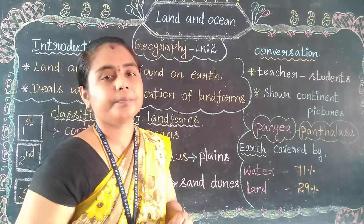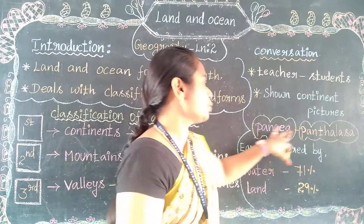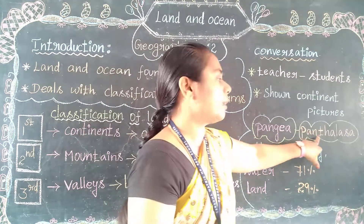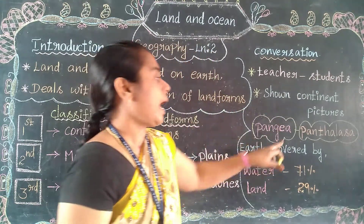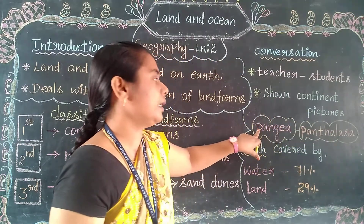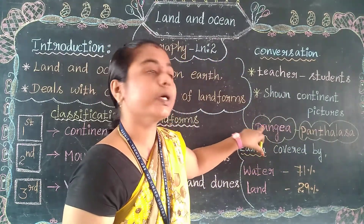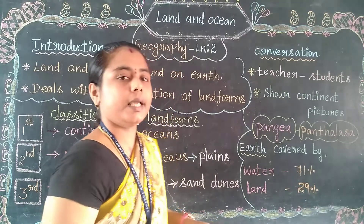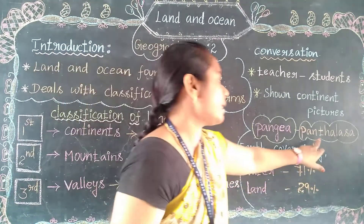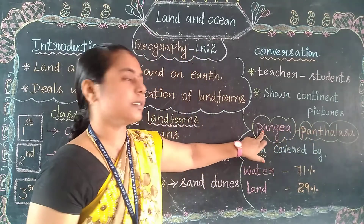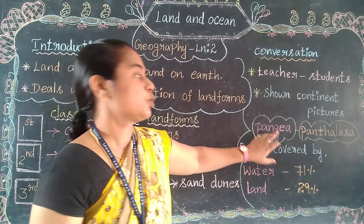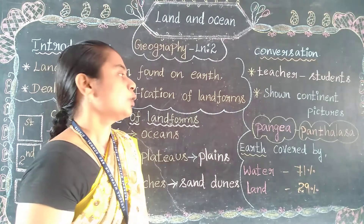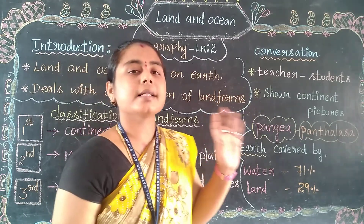Panthalassa — 'Pankalasa' — is the super ocean. Panthalassa always surrounds the Pangea super continent. So Pangea is named as the super continent and Panthalassa is named as the super ocean, which always surrounds the Pangea continent. The students answered well and the teacher then started the lesson.